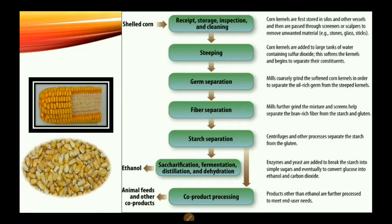After the corn has been shelled, the shelled corn is received, stored, inspected, and cleaned. It then moves to a process called steeping, where corn kernels are added to large tanks of water containing sulfur dioxide. This softens the kernels, and mills then coarsely grind the softened kernels in order to separate the oil-rich germ from the steeped kernels.